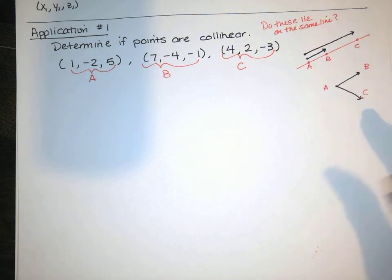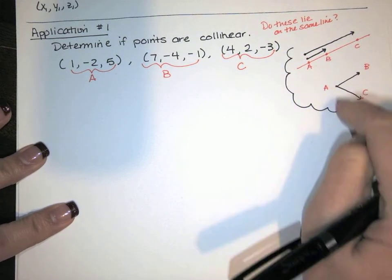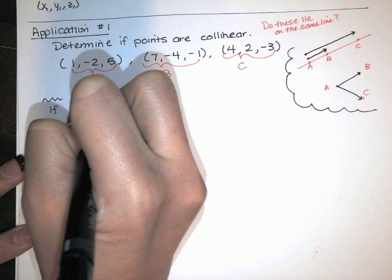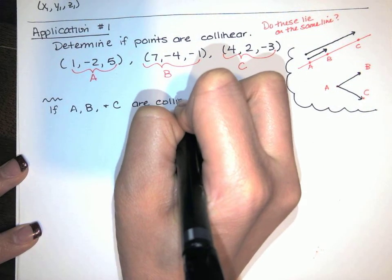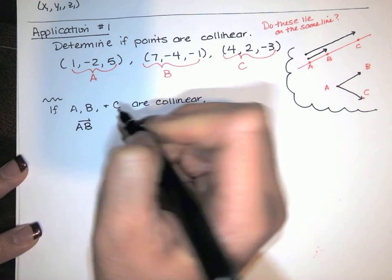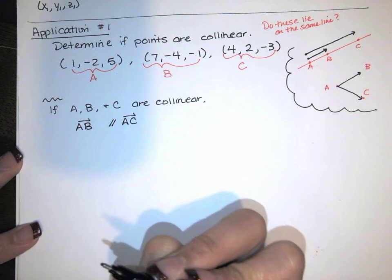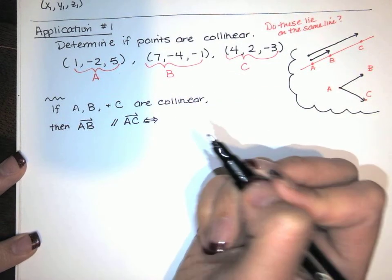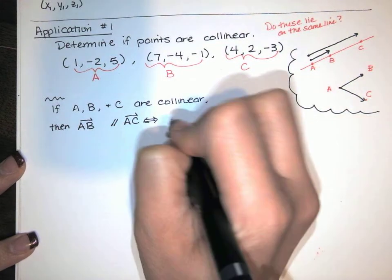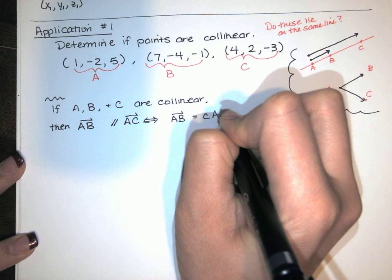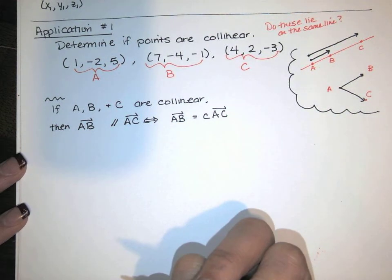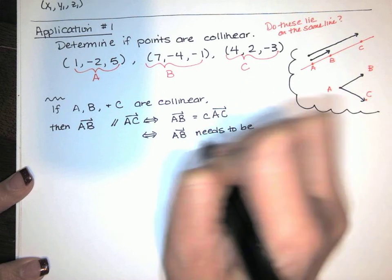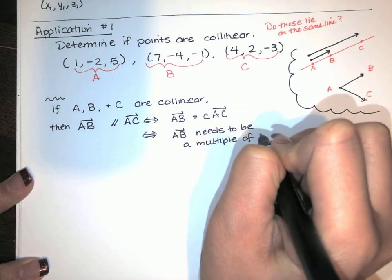From the right angle, our picture might look something like this. So we see from these pictures that if these three points lie on the same line, then the two vectors AB and AC have to be parallel to each other — and vice versa. If they're not parallel, that doesn't hold. So AB has to be some constant times AC if they are truly parallel.